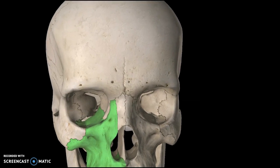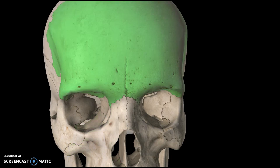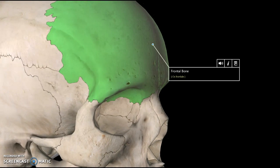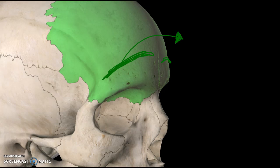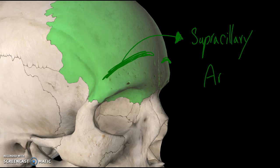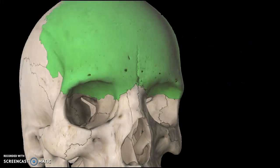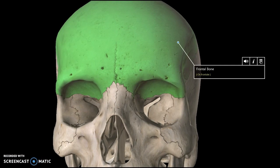Now we can focus just on the frontal bone. The first structure to talk about — which is not very clear in this 3D model — is the arches here. If you touch your eyebrows right now, you can feel a little bump, more prominent on males than females. You'll have one on each side, and these are known as the supraciliary arches — little bumps right above the eye socket.